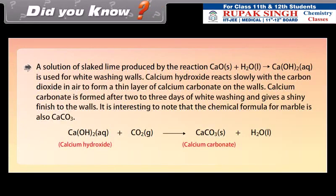Did you know? A solution of slaked lime produced by the reaction is used for whitewashing walls. Calcium hydroxide reacts slowly with the carbon dioxide in air to form a thin layer of calcium carbonate on the walls. Calcium carbonate is formed after two to three days of whitewashing and gives a shiny finish to the walls. It is interesting to note that the chemical formula for marble is also CaCO3.